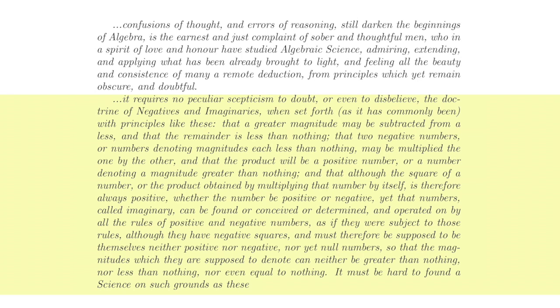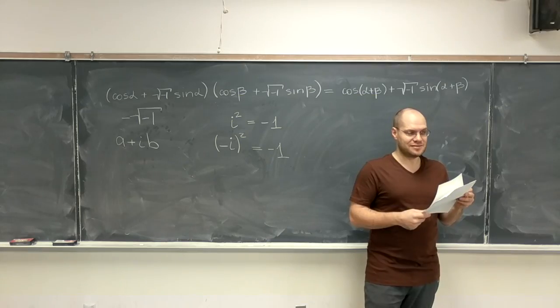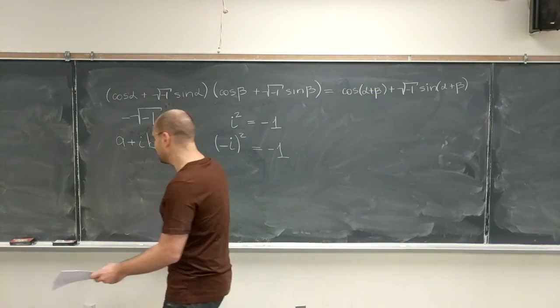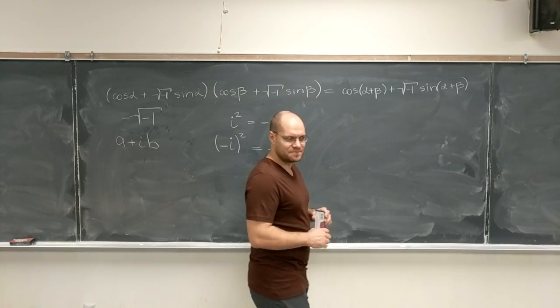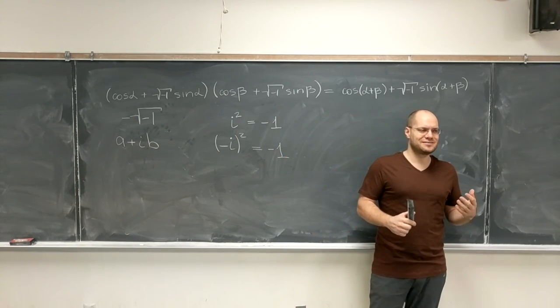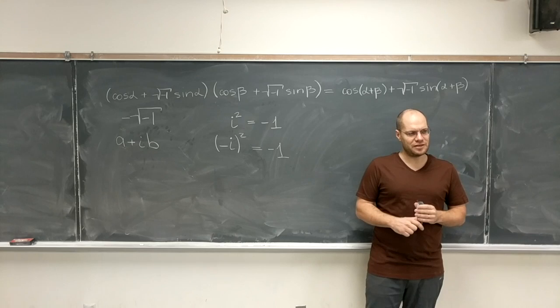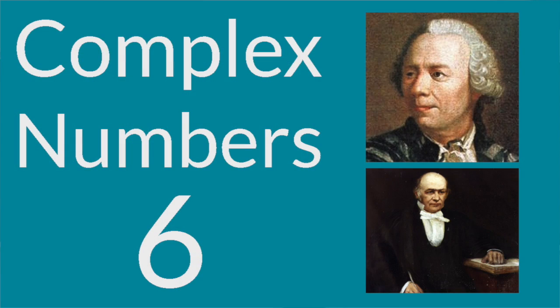So that the magnitudes which they are supposed to denote, can neither be greater than nothing, nor less than nothing, nor even equal to nothing, it must be hard to find a science, on such grounds as these. Okay, so, whatever doubts you guys have about the square root of minus one, they're all legitimate. So both sides are brilliant in their own ways, so here is what Hamilton suggests, and I'll come to you guys and do this.